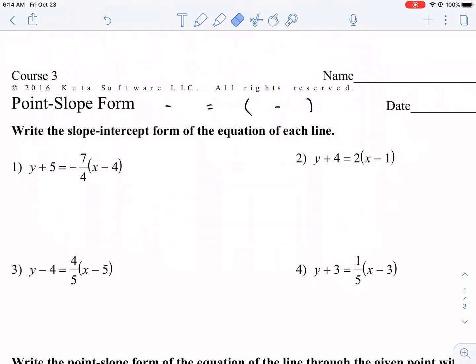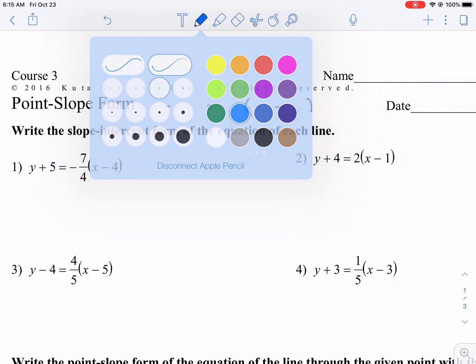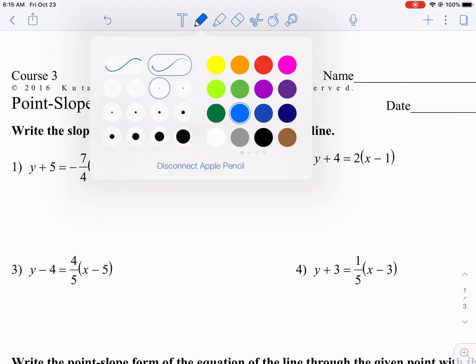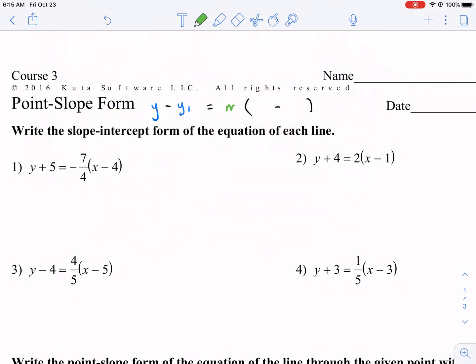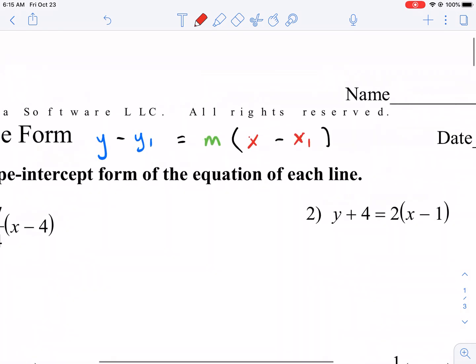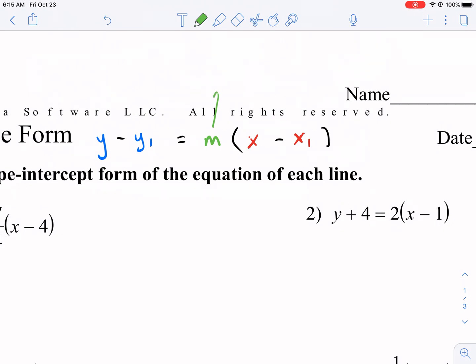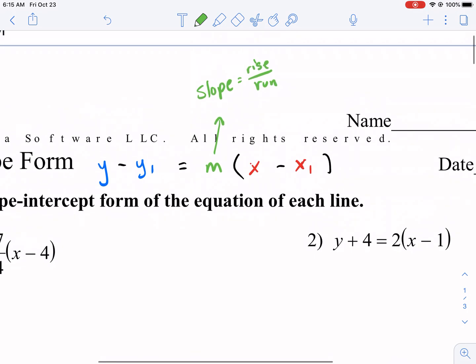First, we need to understand what is point-slope form. And it is y minus y1 equals the slope m times x minus x1. Now what does all this mean? It's important to understand what these variables mean. M, just like point-slope form, is our slope. This is our rise over our run, the difference in y's over the difference in x's. You find it by doing y2 minus y1 over x2 minus x1. That is our slope.